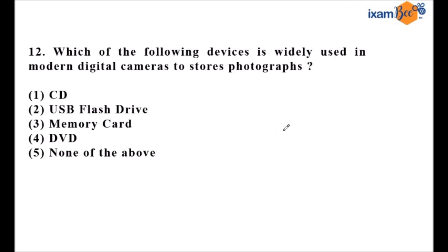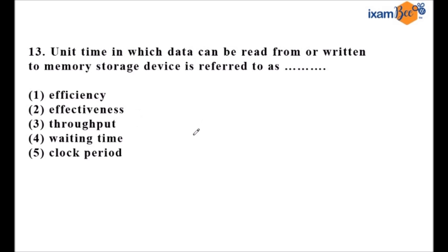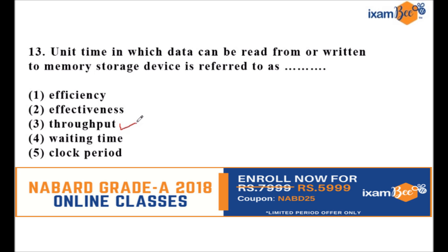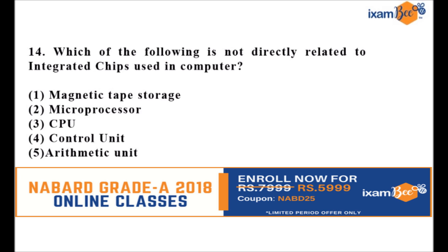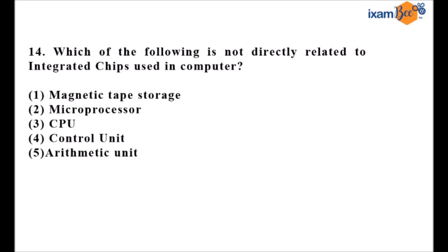Question twelve asks: which device is widely used in modern digital cameras to store photographs? The answer is a memory card, found on page 20 of the provided PDF. Question thirteen asks: the unit of time in which data can be read from and written to a memory storage device is referred to as what? The answer is throughput — the amount of time data takes to transfer from one memory source to another, explained on page 18 of the PDF.